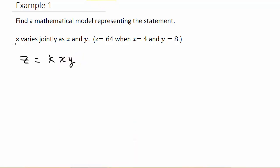Alright, and so now they're telling us that Z is 64, X is 4, and Y is 8. So we're going to take each of these and plug them in. Plug 64 in for Z, 4 in for X, and 8 in for Y. Alright, so we get 64 equals K times X, which is 4, times Y, which is 8.